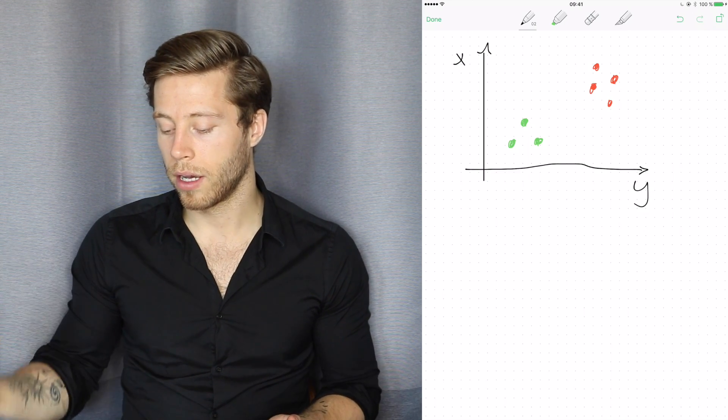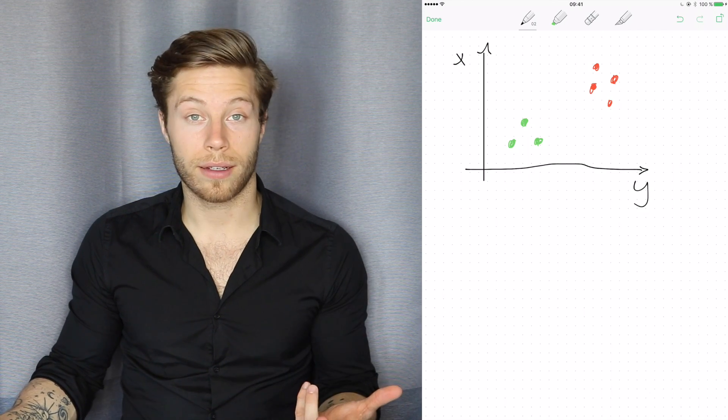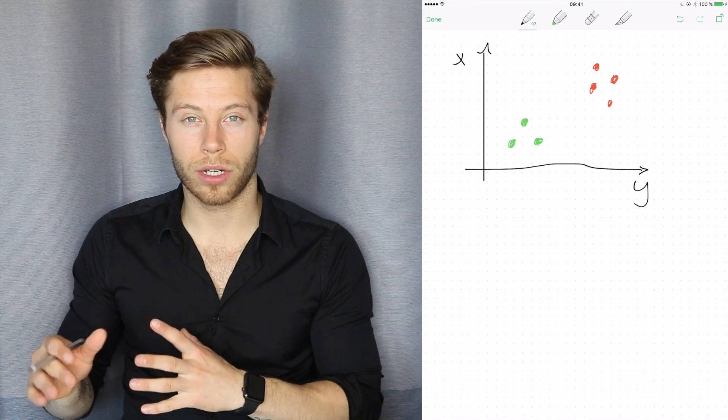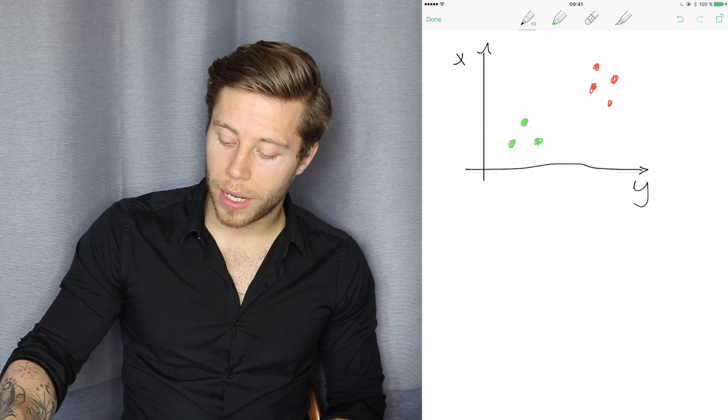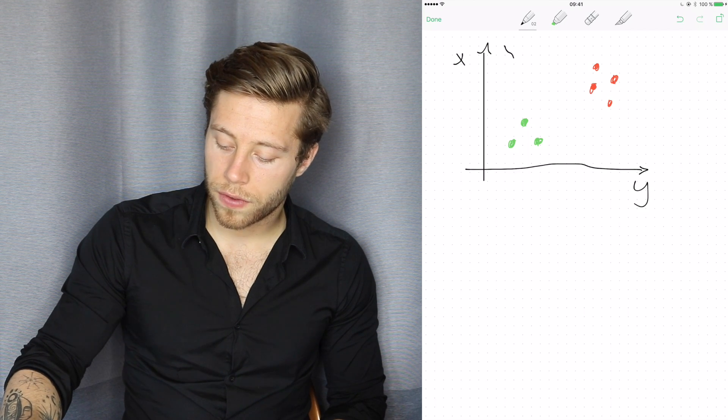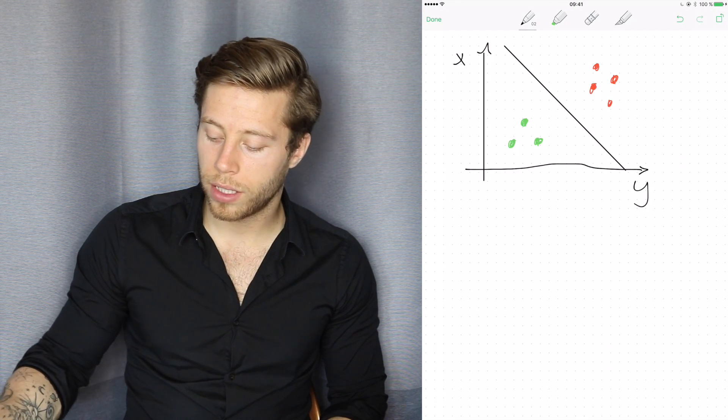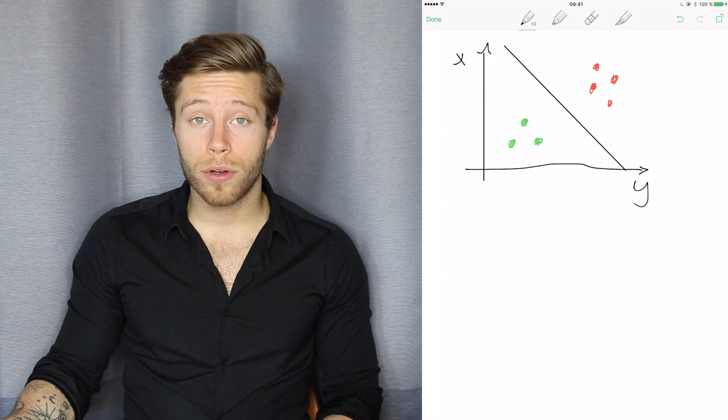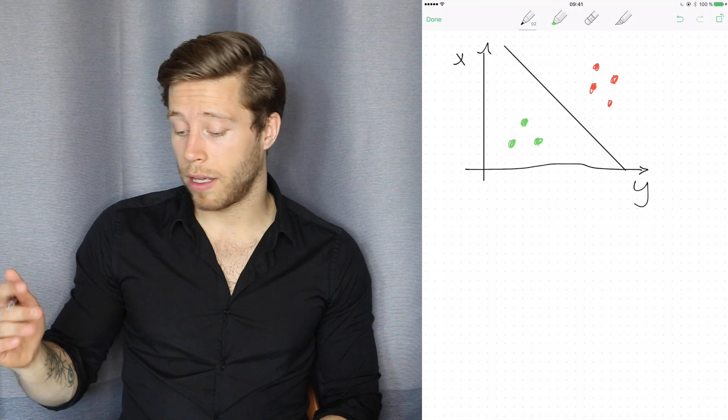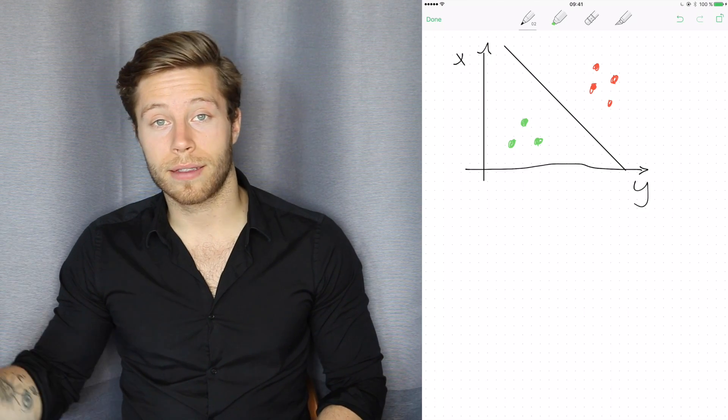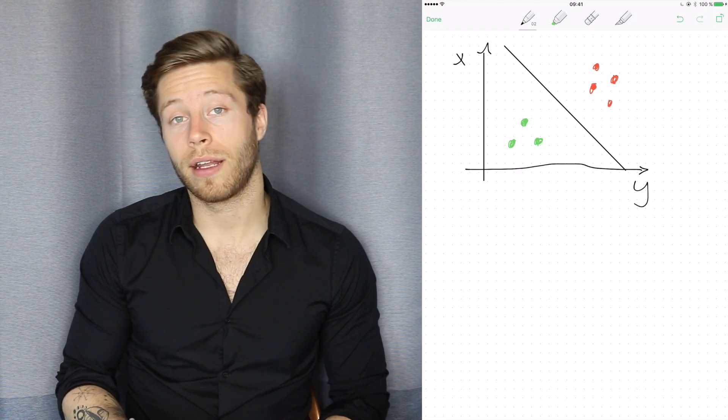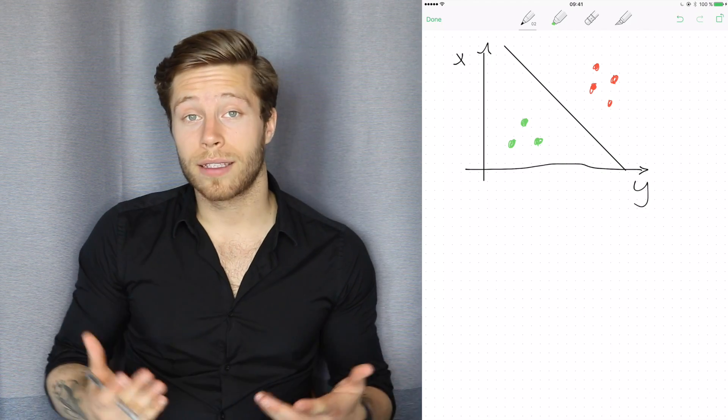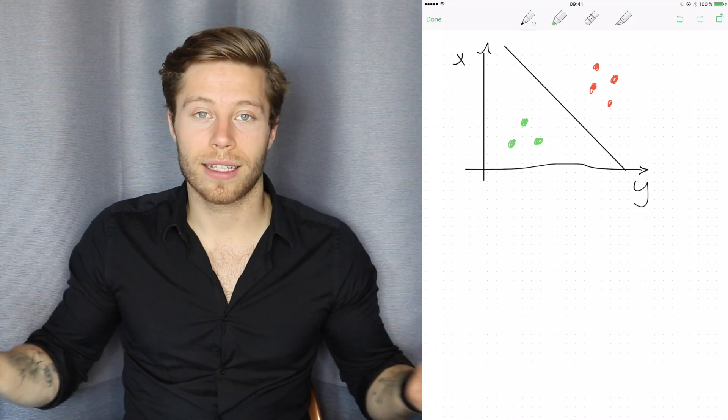So a linear classifier simply is an algorithm that in this two-dimensional space is able to find a line that divides these two groups, these two different types of points. You have two classes here, right? You have the green class and the red class. And we want to separate these on the graph using a line. So basically, a linear classifier just draws a line between these and says, I found a line that separates both of these. Now I can use it: if it's on the right side of the line, it's this class, and if it's on the left side, it's this class. That's the basics of what a linear classifier means.